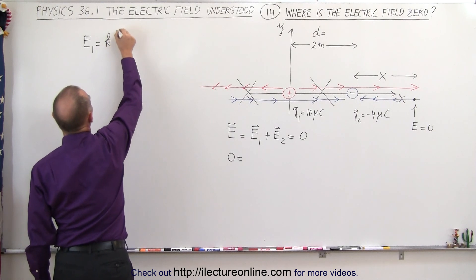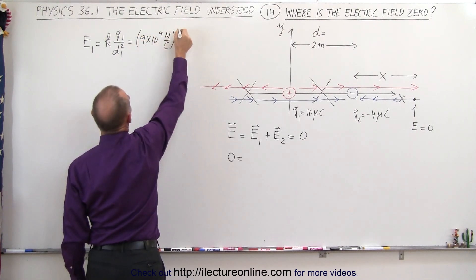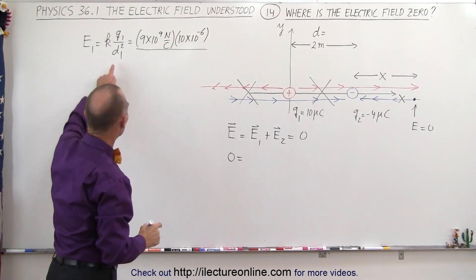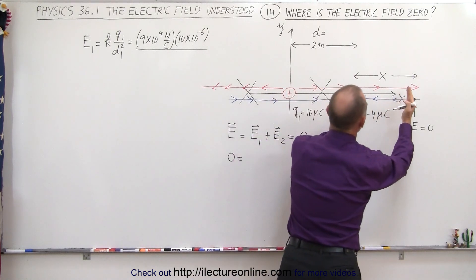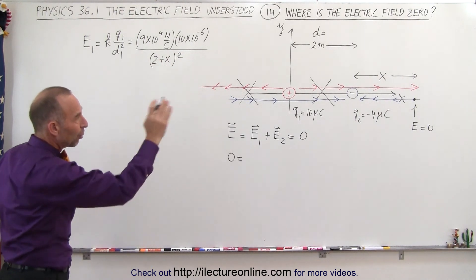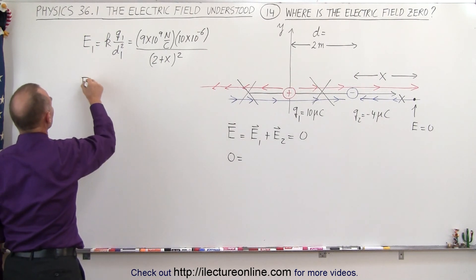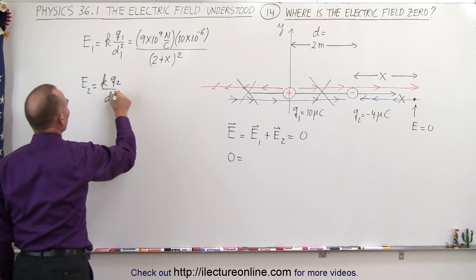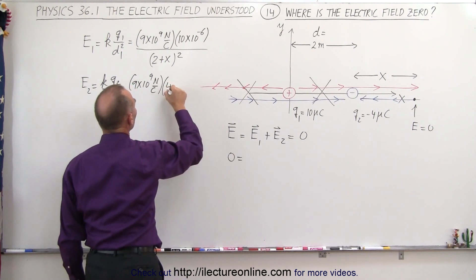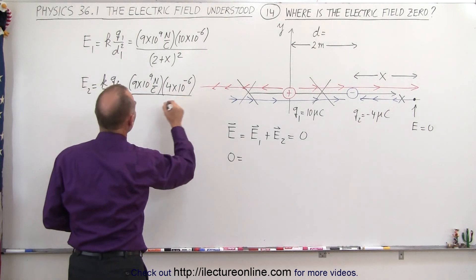E1 at that point equals K times Q1 divided by D1 squared, which is 9×10⁹ N/C times 10 microcoulombs (10×10⁻⁶), divided by the distance squared — that distance being 2 plus x, so (2+x)². For E2, that equals K times Q2 divided by D2 squared: 9×10⁹ times 4 microcoulombs (4×10⁻⁶), divided by x squared. We take only the magnitude of the charge.